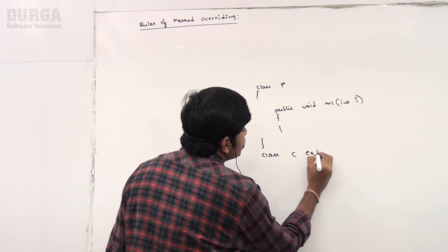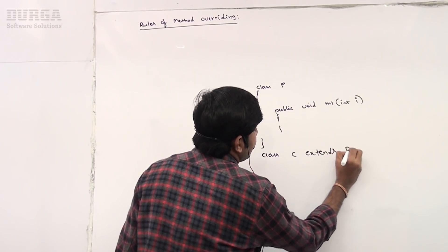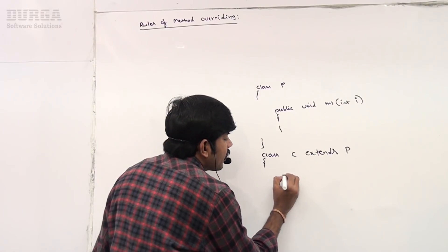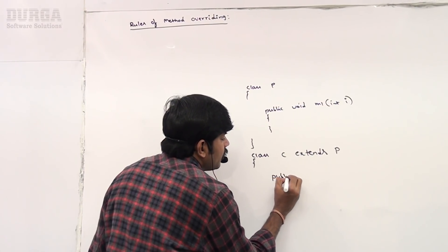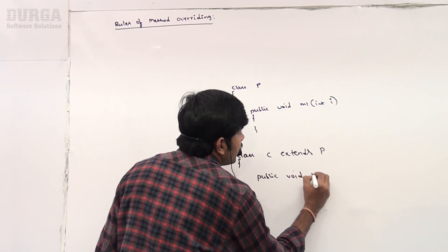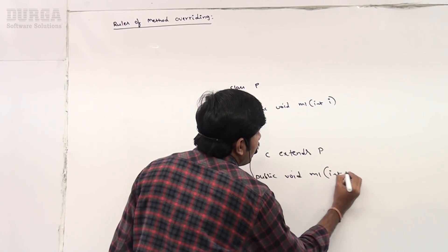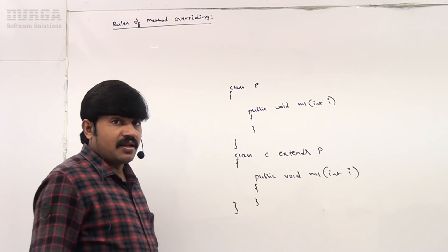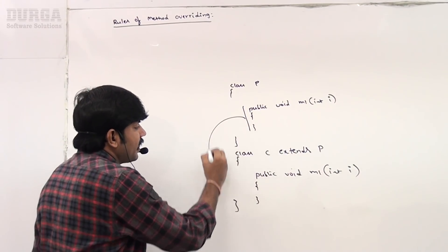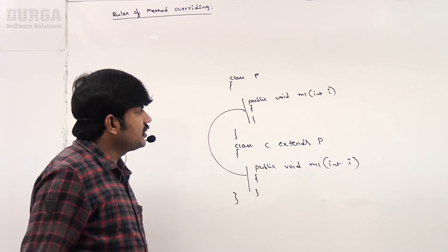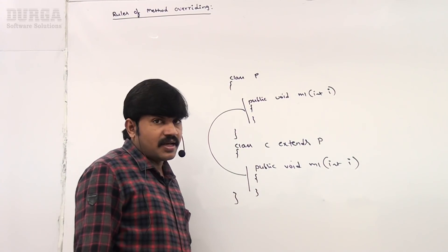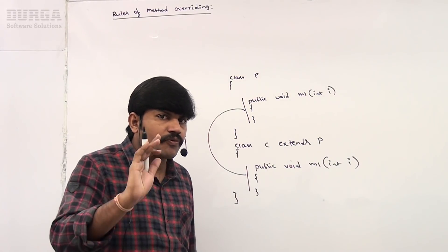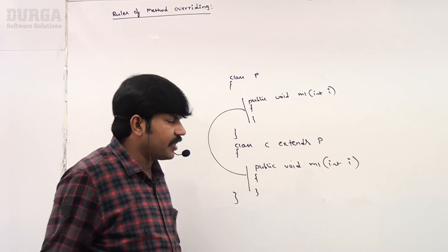Now I'm taking class C extends P with public void m1(int i). Can you please tell — is it valid overriding or not? Yes, it is valid overriding. The first rule: what we have to check — in overriding, method names must be same and argument types must be same, including order.